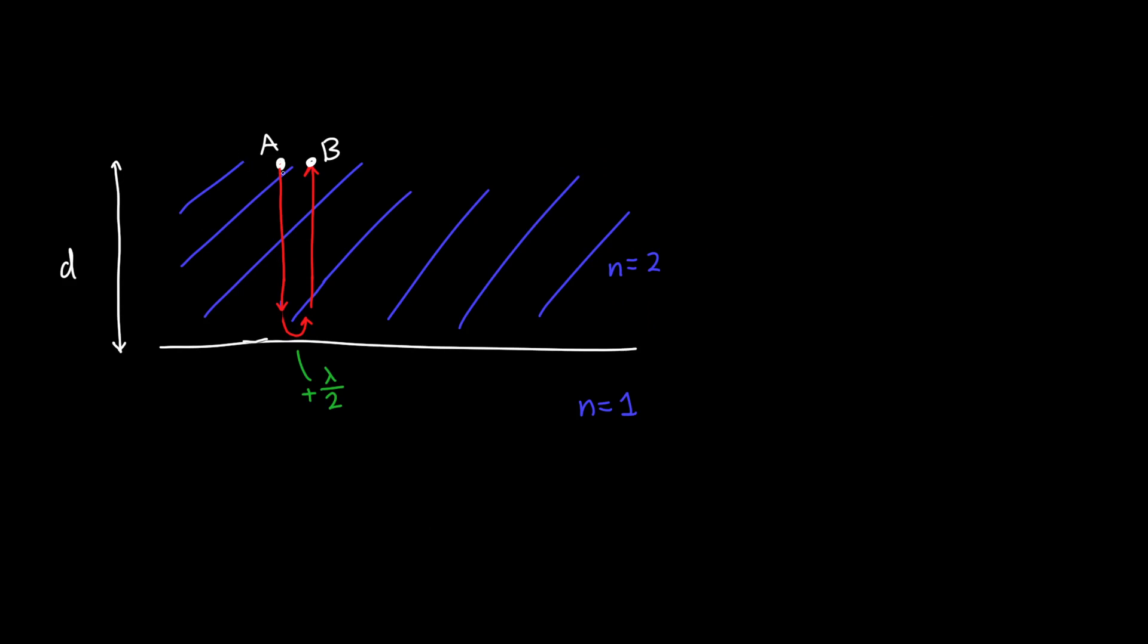So let's do an example. In this example, we're going to compute the optical path length from point A to point B after light travels to an interface and then back from an interface. Because this first material that we're in has a higher refractive index than the second material, we're going to pick up a phase shift of lambda over 2. So how do we calculate the optical path length?